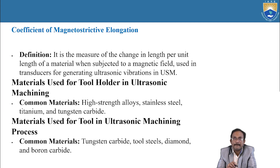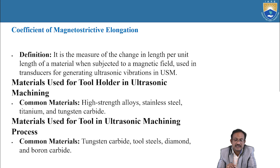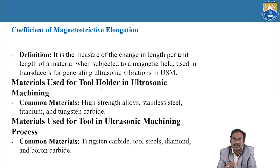Coefficient of magnetostrictive elongation — definition: it is the measure of the change in length per unit length of a material when subjected to a magnetic field, used in transducers for generating ultrasonic vibrations in ultrasonic machining. Common materials used for tool holder in ultrasonic machining: high strength alloys, stainless steel, titanium, and tungsten carbide.